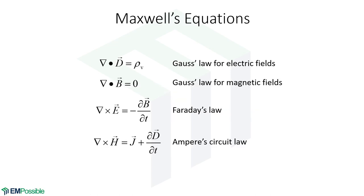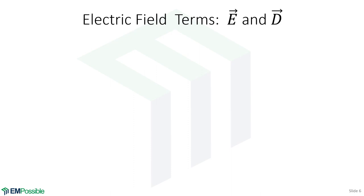These are the four Maxwell's equations. Supposedly these four equations describe all of classical electromagnetics — why we see ourselves in a mirror, why we see rainbows. Just looking at these equations, it's not obvious. You don't need to understand them; I'm showing them here for your interest. Let's discuss the terms you see in these equations and then describe the equations themselves.